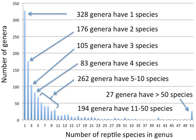When the generic name is already known from context, it may be shortened to its initial letter, for example C. lupus in place of Canis lupus. Where species are further subdivided, the generic name, or its abbreviated form, still forms the leading portion of the scientific name, for example Canis lupus familiaris for the domestic dog when considered a subspecies of the gray wolf in zoology, or as a botanical example, Hibiscus arnottianus ssp. immaculatus.